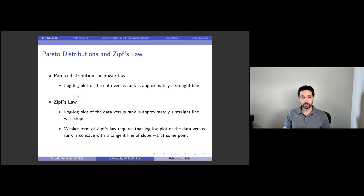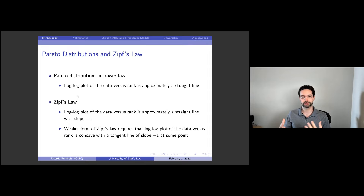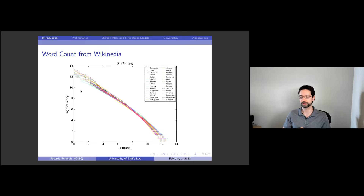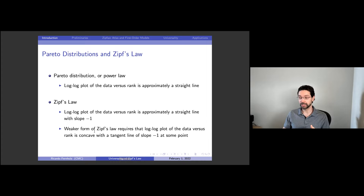One of the things I'm going to argue today, based on some past work, is that there's also a weaker form of Zipf's law. Not that you get a straight line log-log plot, but instead you can get a concave curve when you plot size versus rank, and you're going to have a tangent of minus one somewhere. I'm going to argue this is a weaker form of Zipf's law and a very closely related phenomenon. Even for the classic Zipf's law with word frequency, if you look closely at some of these lines, you can see they're not completely straight — you see a little bit of curvature, especially in the middle.